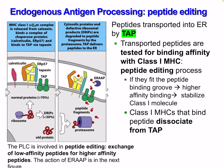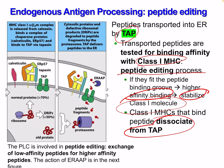Now, peptide editing: peptides transported to the ER by TAP are tested for binding affinity with the class 1 MHC — a kind of natural selection process. Peptides that fit the peptide binding groove have higher binding affinity and stabilize the class 1 MHC molecule. Class 1 MHC molecules that bind a peptide disassociate from TAP. The peptide loading complex is involved in peptide editing — exchanging low-affinity peptides for higher-affinity peptides.